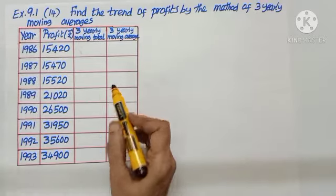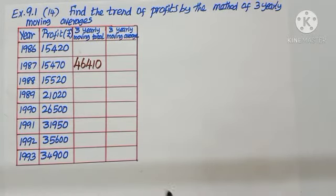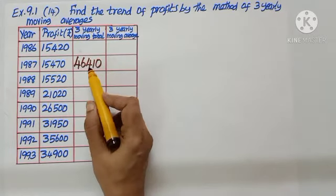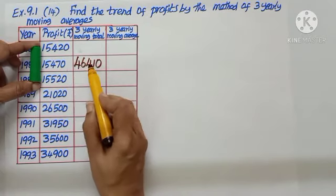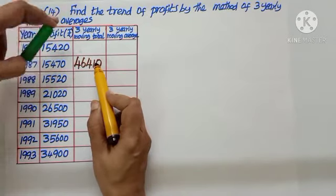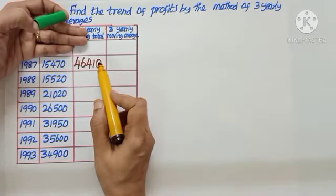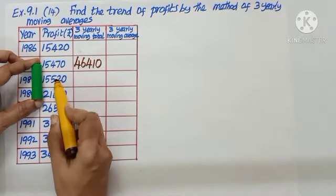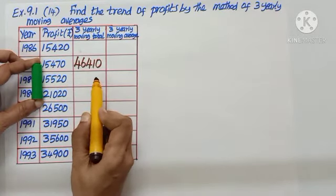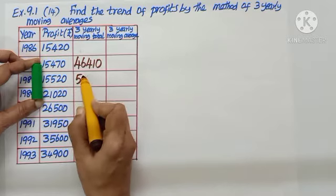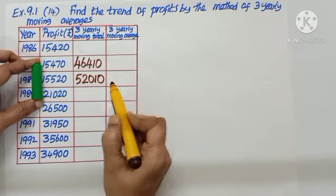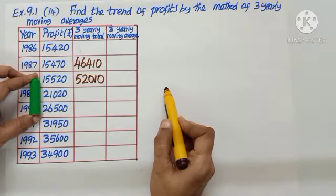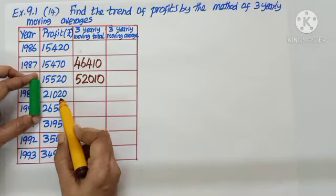Add and find out, I get 46,410. Now first three values we completed, forget the first value. Now take the next three, that is these three. Where should I write? 1, 2, 3, write it against here. The total is 52,010.